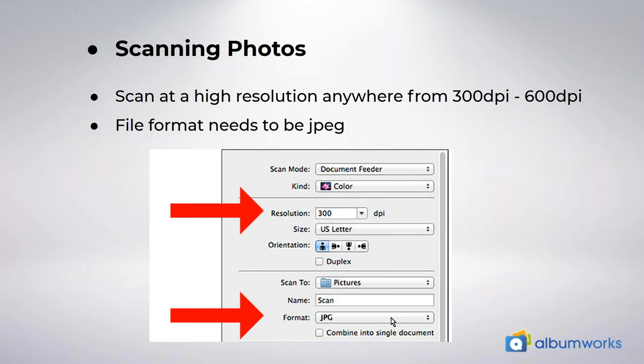Next, you need to decide in what order you want to display your history. For this type of album, chronological order normally makes the most sense. You may want to start with some information about the area or region the family comes from, then include a family tree or some diagrams, and from there look at each family member — their early life, marriage, family, career, and so on. You need to think about how you want to tell your story before you get started, as everyone's approach will be a little different.